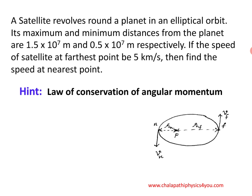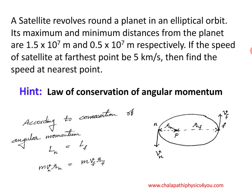Around the planet, a satellite is revolving in an elliptical orbit. Consider N as the nearest point and F as the farthest point. From the planet, the farthest point is at distance rf and the nearest point at distance rn. The velocity at the nearest point is vn and at the farthest point is vf. According to the law of conservation of angular momentum, the angular momentum is constant along the entire elliptical path.